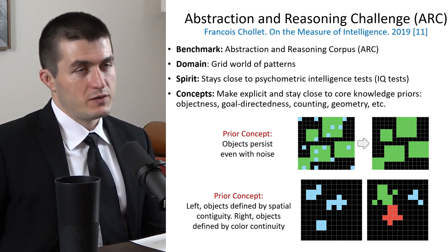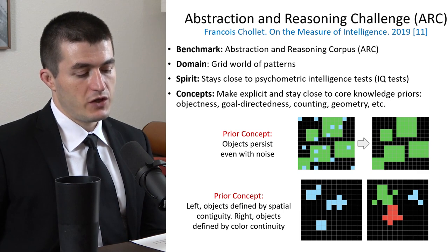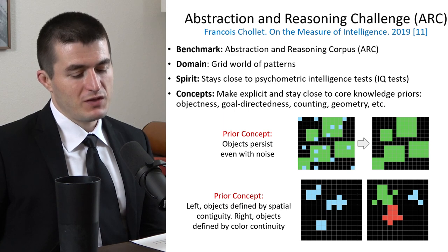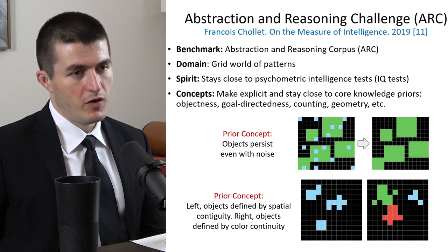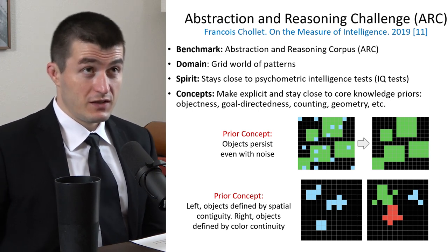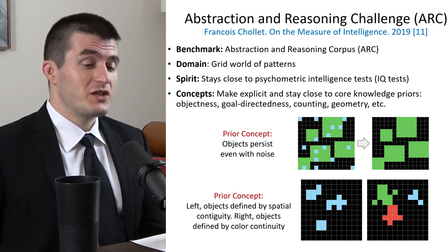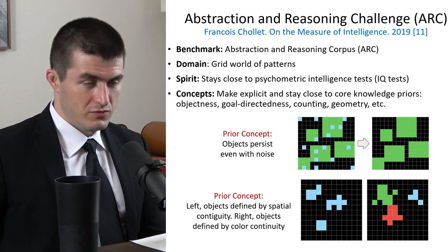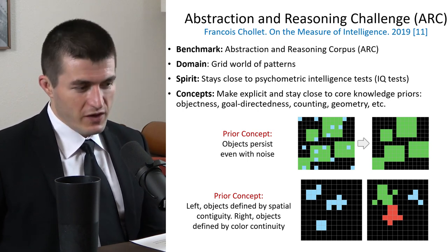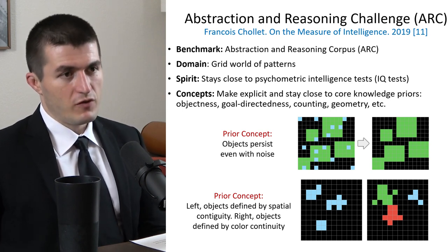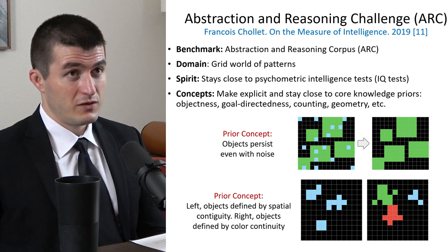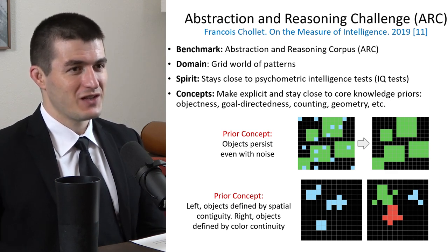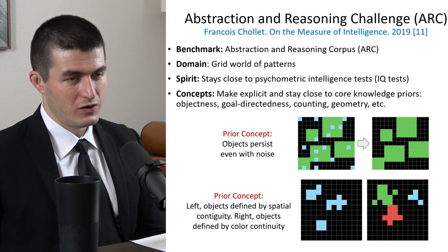One of my favorite aspects of the paper and the ARC challenge is the process of making priors explicit. Just that act alone is a really powerful one. It's a really powerful question to ask of us humans: what are the priors that we bring to the table? Once you have those priors, how do you use them to solve a novel task? Just making the priors explicit is a really difficult and really powerful step. That's visually beautiful and philosophically beautiful — part of the work you did with the paper and the ARC challenge.